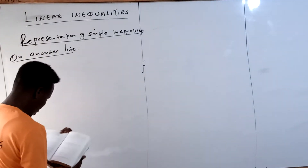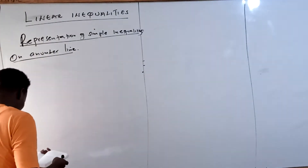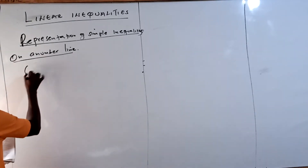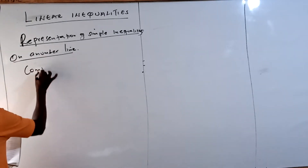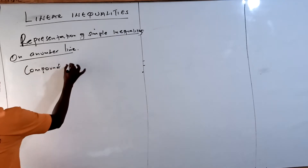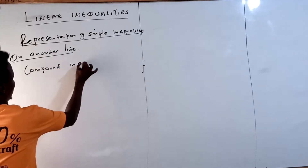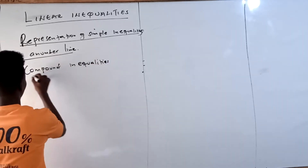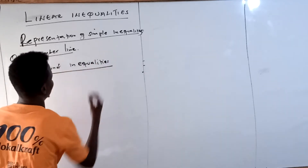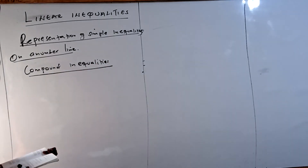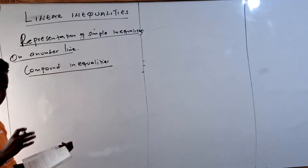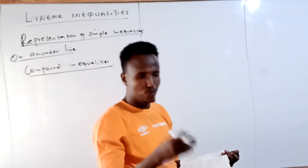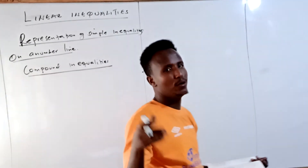Now let's go ahead and see how we are going to represent compound inequalities on a number line. Where we have two simple inequalities joined together, they form a compound inequality.